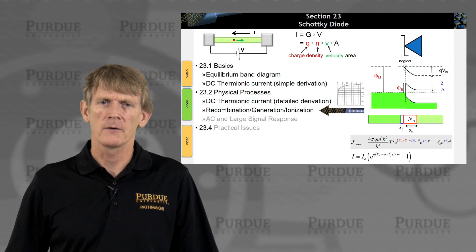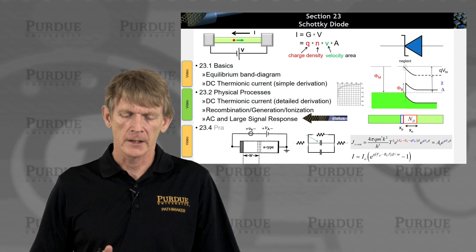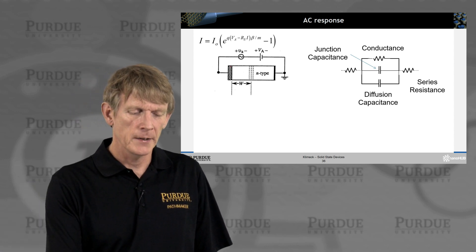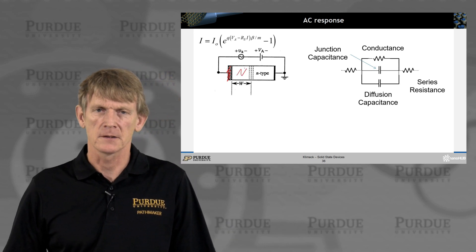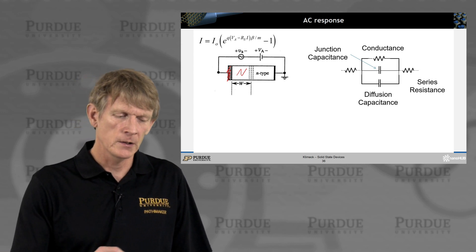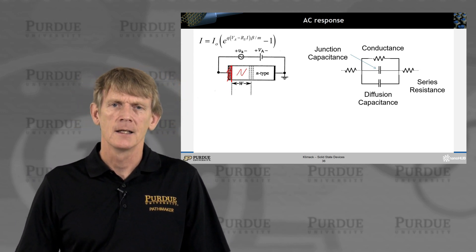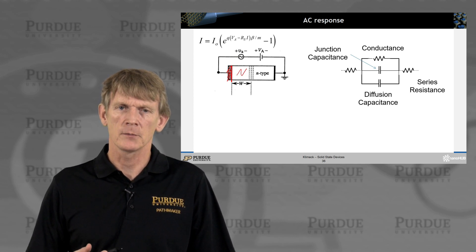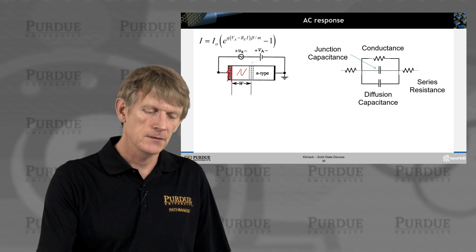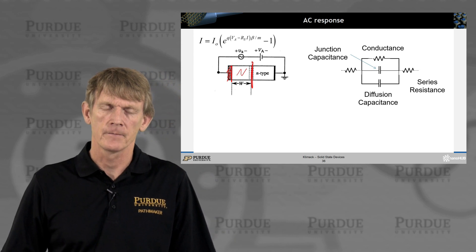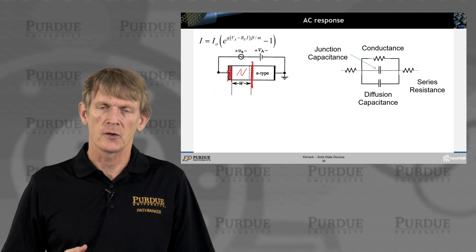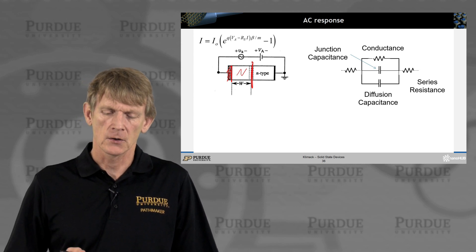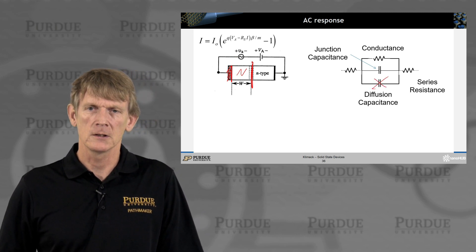Now let's go from recombination/generation into the AC and large signal response. This is similar to what we had before, but now we have a metal contact and just the N-doped semiconductor. We can carry through all the calculations we did before, but one thing to keep in mind is that these are responses from the majority carriers. This is a majority carrier device in both forward and reverse bias — we don't have minority carriers that we need to consider. So really the diffusion capacitance is not something we need to consider here.